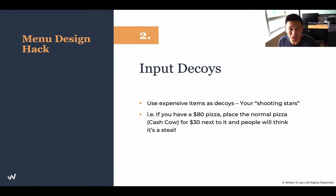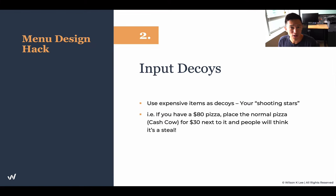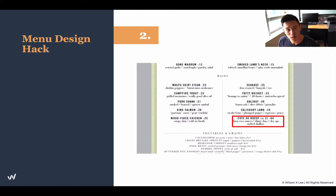Imagine having an $80 pizza — that's outrageous. Then put your normal pizza, which is a cash cow for you at $30, next to it. People will think it's a steal. Even then $30 for a pizza is on the steeper end, but when you compare $80 with $30, you choose the $30 one. That's exactly what a lot of restaurants are doing. You see this steak is $64, whereas others are $24, $30, $23, $25, $22, $23, $21, $28, $25. You can clearly see this is a decoy.